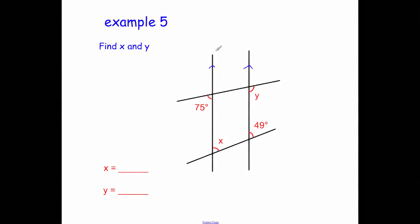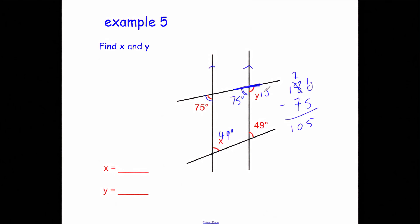Example 5: we have parallel lines and two transversals. Find X and Y. X and 49 degrees are corresponding angles — you can see the F shape — so X is 49 degrees. For Y, the 75 corresponds with the angle to the left of Y, so that angle is 75 degrees. Since Y and 75 make a straight line, Y equals 180 subtract 75, which is 105 degrees.